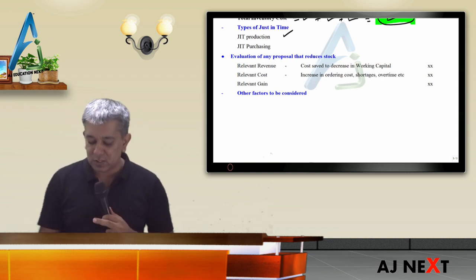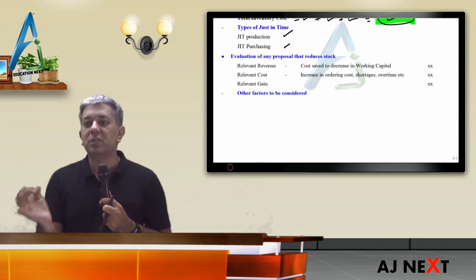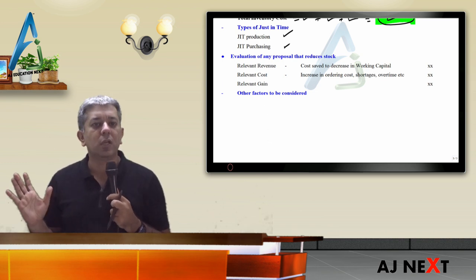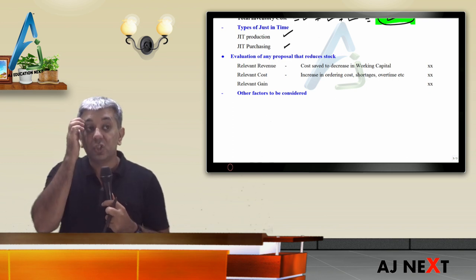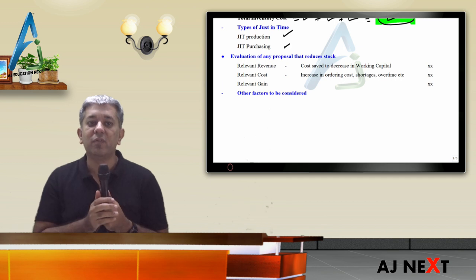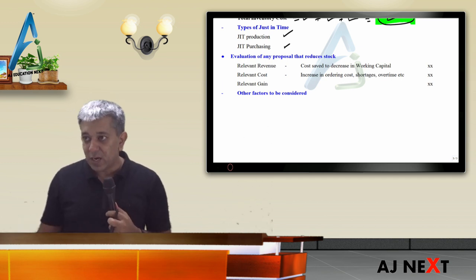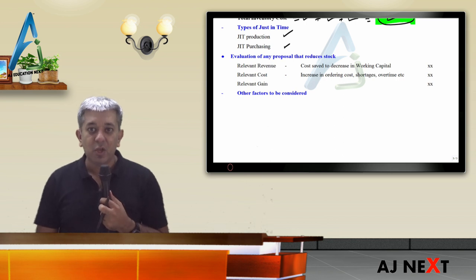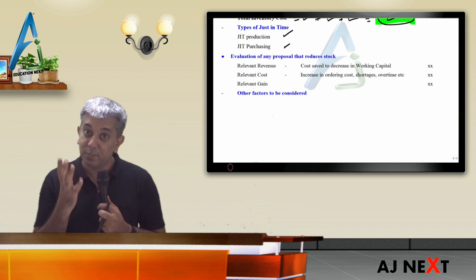Types of just-in-time system: just-in-time production and just-in-time purchasing. Just-in-time production means produce only when customer order comes. Don't make and keep excess goods unnecessarily. One advantage: working capital requirement will be very less. But remember, if demand suddenly increases a lot, you'll have to tell your workers to do overtime, so your costs may increase.